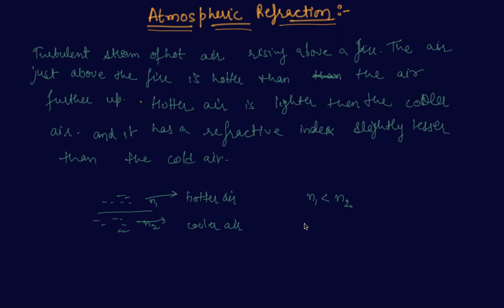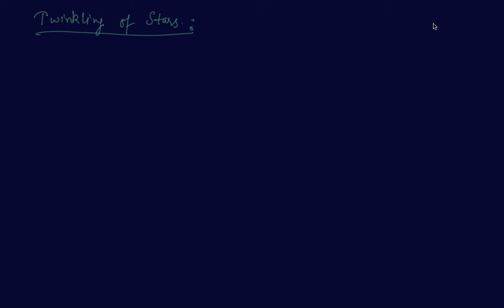Now we will discuss about the twinkling of stars and why stars appear to be at a different position than their actual position. As I told you, there is a change in the refractive index as you come down to the surface of the earth. A person standing at the surface of earth experiences refractive indices N1, N2, N3 depending on the temperature of the air, where N1 is less than N2 is less than N3.